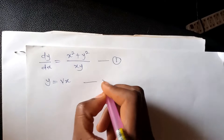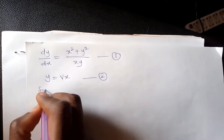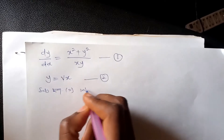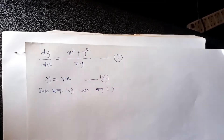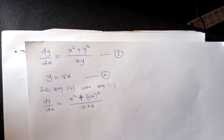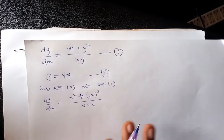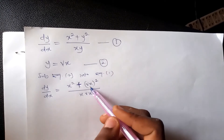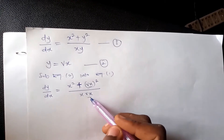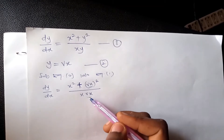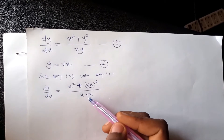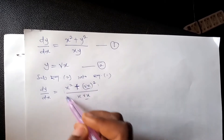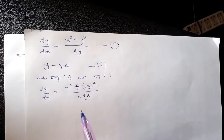This is equation one, and this is equation two. We substitute equation two into equation one. By substituting y equals vx, I change y in the expression and then expand to see if it is possible to remove the independent variable x from the expression.